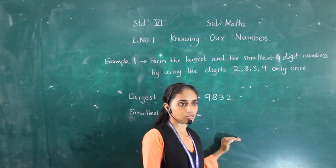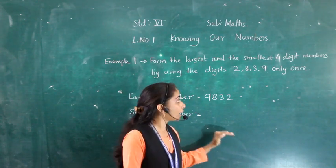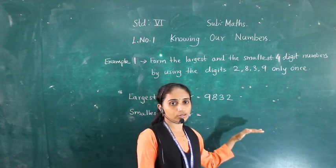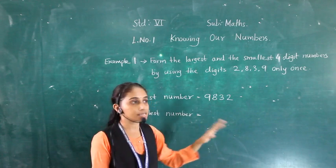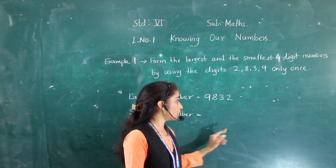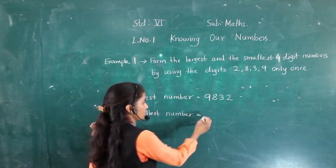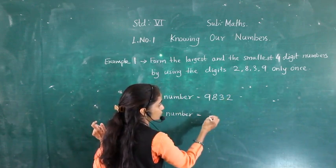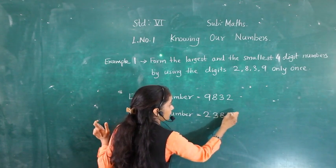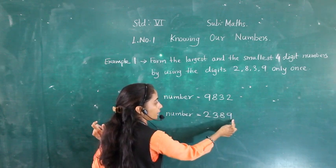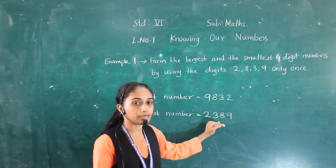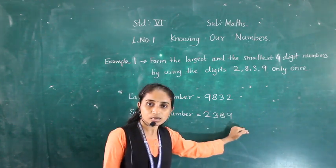While writing the smallest number, we have to arrange the digits in ascending order. But the first digit should be non-zero. Here there is no zero, so the smallest number is simply the digits in ascending order: 2, 3, 8, 9. So 2389 is the smallest number.